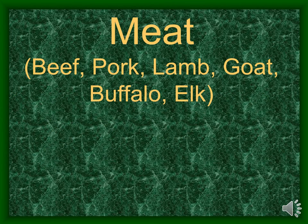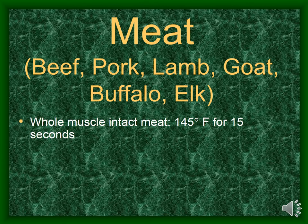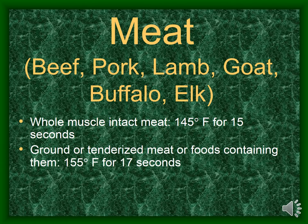The next set of cooking temperatures is for raw meat, which includes beef, pork, lamb, goat, and game animals such as buffalo and elk. Whole muscle intact meats must be cooked to at least 145 degrees Fahrenheit for at least 15 seconds. Ground or tenderized meat, or foods containing ground or tenderized meat, must be cooked to at least 165 degrees Fahrenheit for at least 15 seconds.